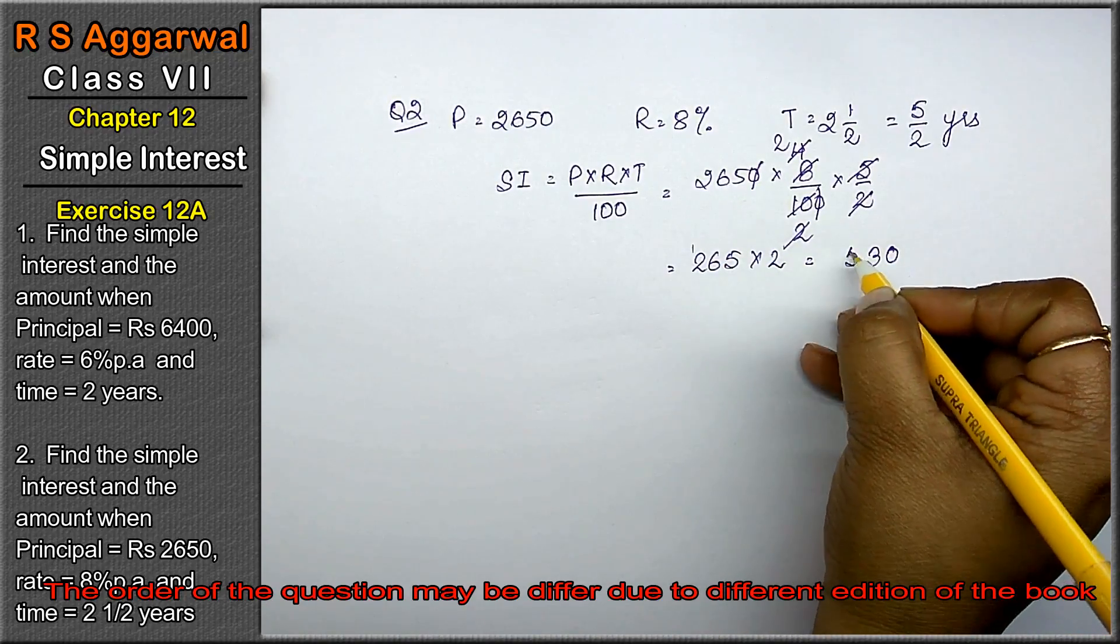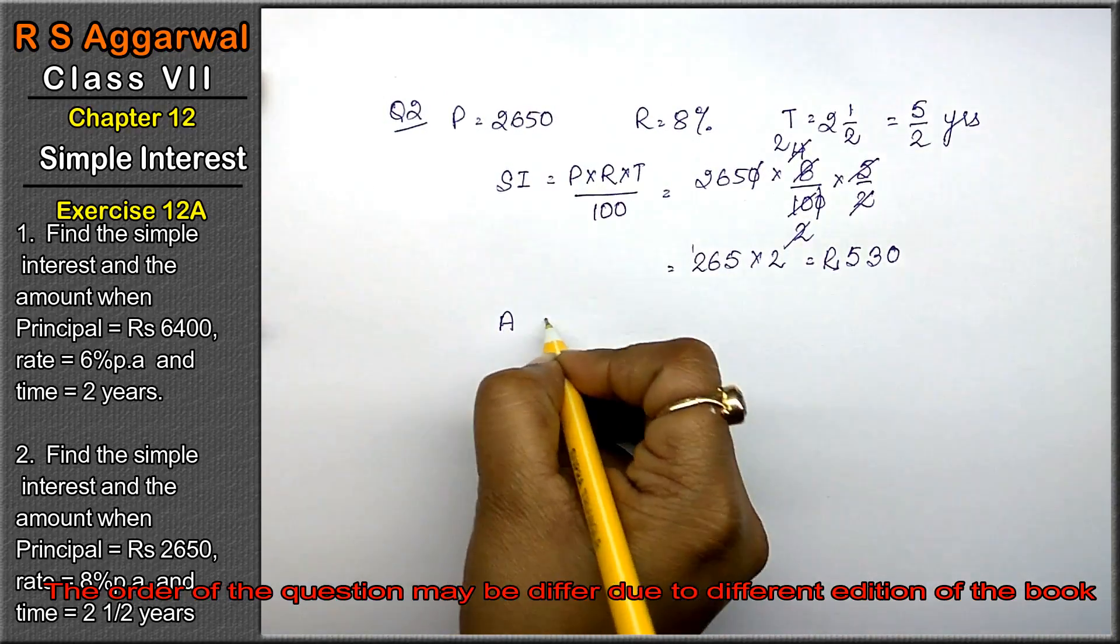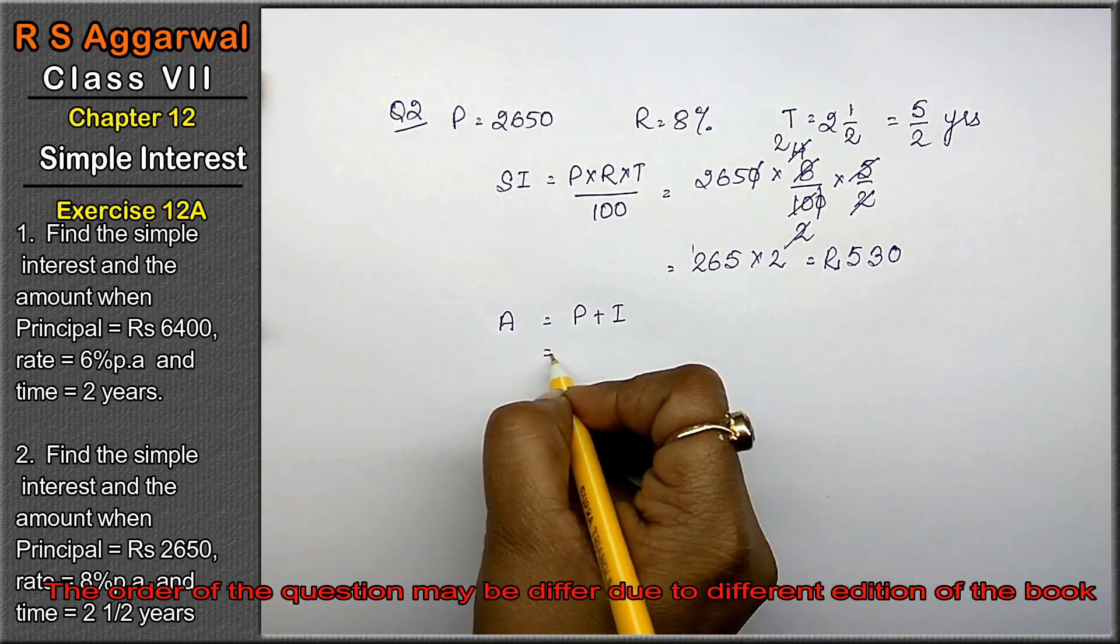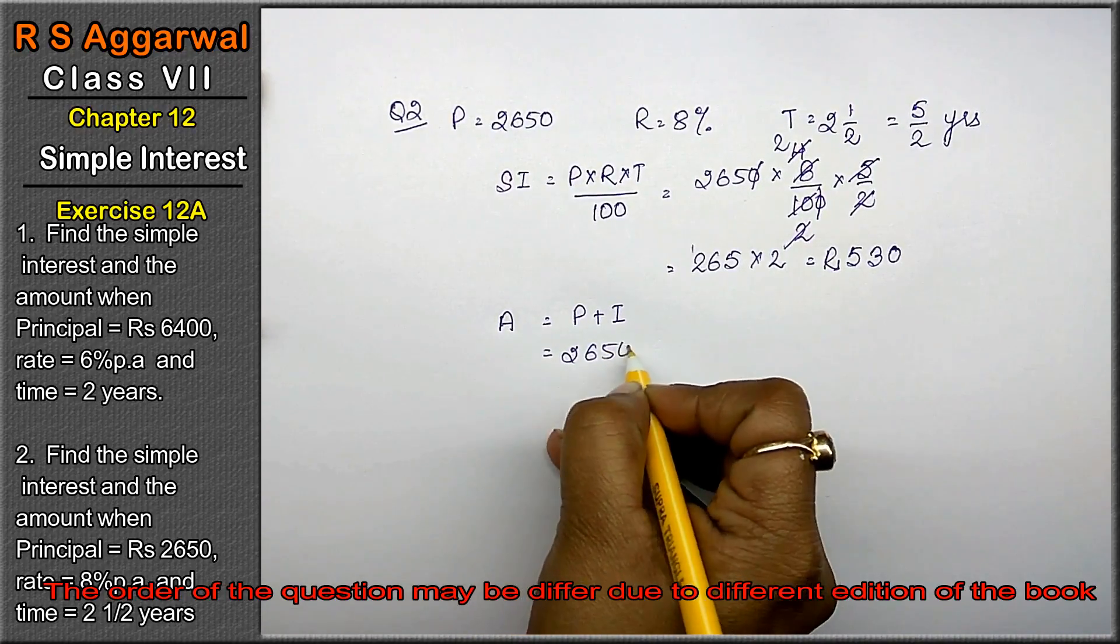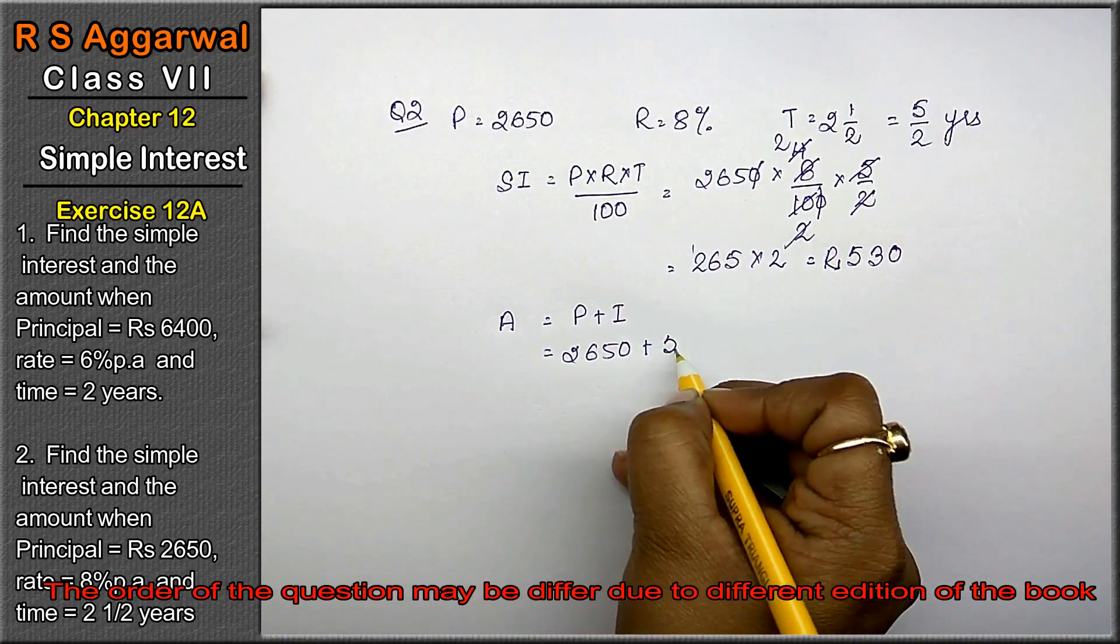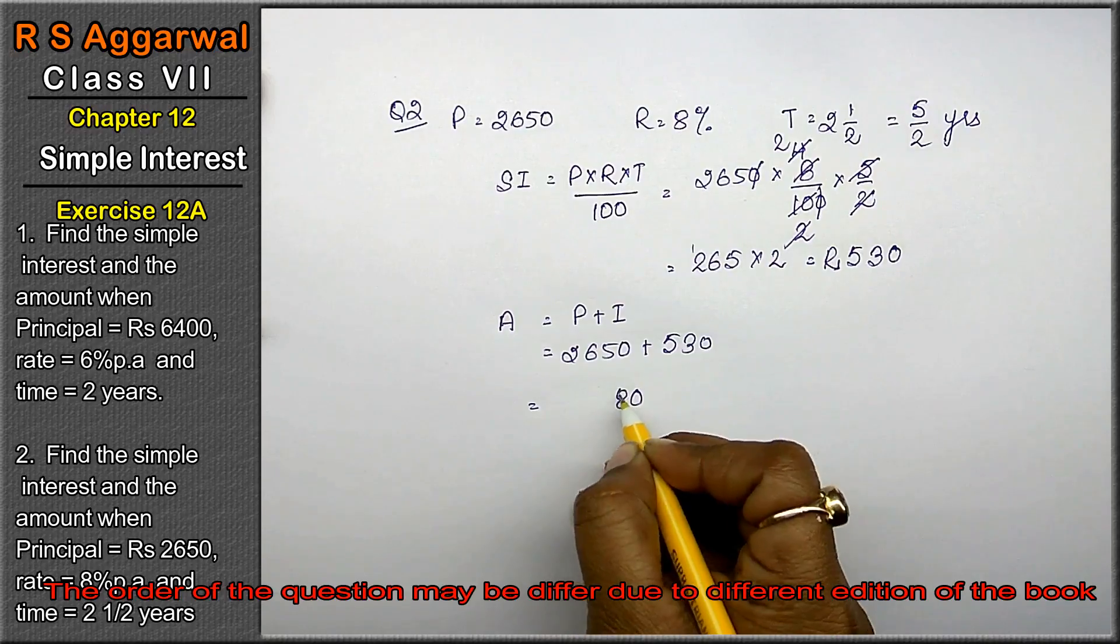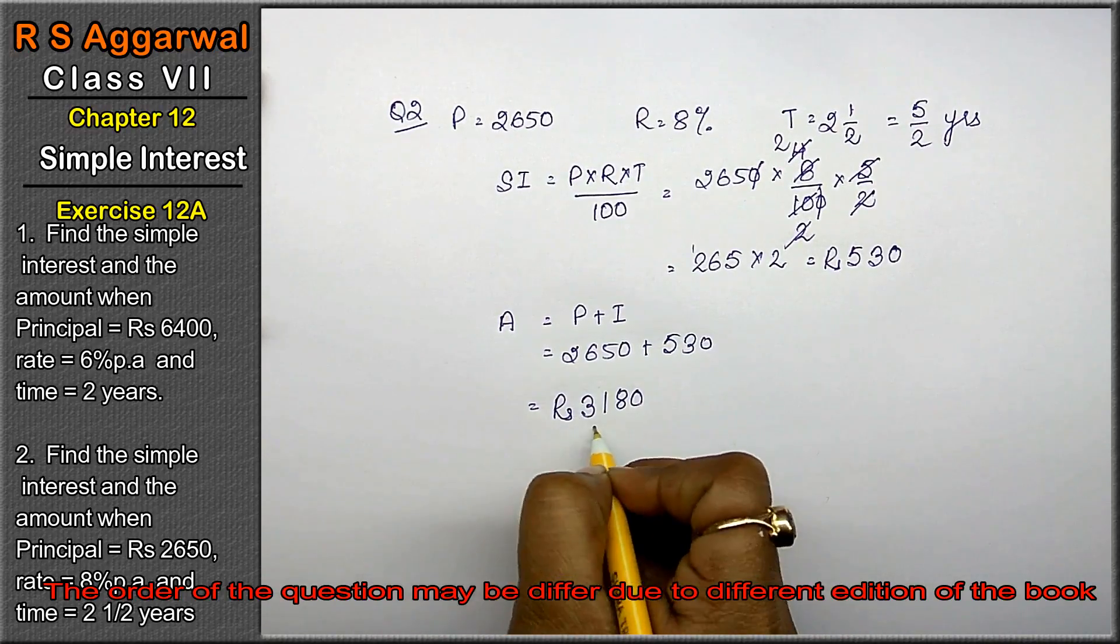530 is the simple interest. Now we calculate the amount. Amount formula is P plus I. P is 2650 and I is 530, which gives 3180 as the answer.